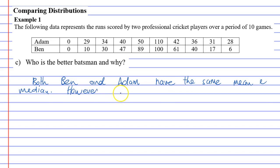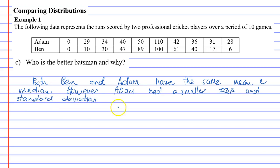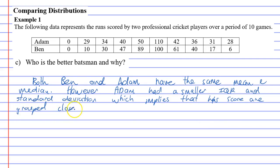However, Adam had a smaller interquartile range and standard deviation, which implies that his scores are grouped close together. Now, what does that mean? Why is that good?